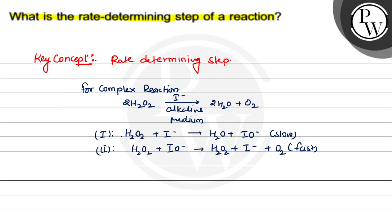So for complex reactions, it is said that the slowest step is the rate determining step. From here we can conclude, hence for complex reactions,